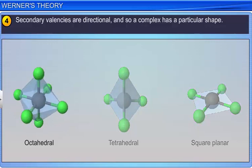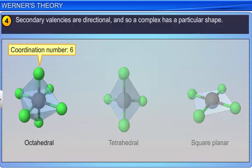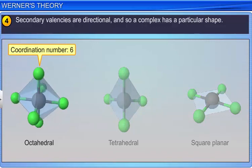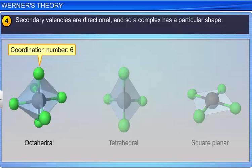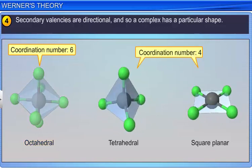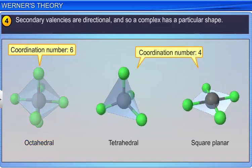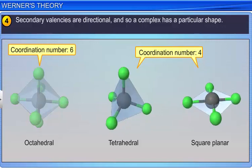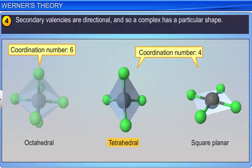The most common coordination number in transition metal complexes is 6, and the shape is usually octahedral. The coordination number 4 is also common and gives rise to either tetrahedral or square planar complexes.